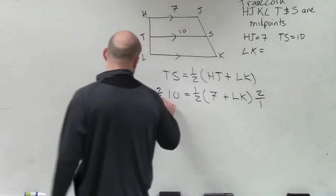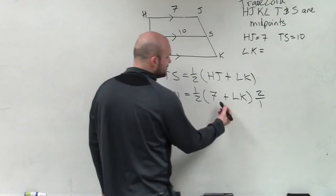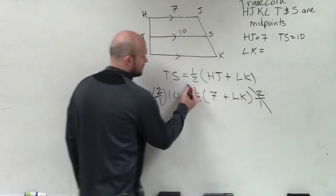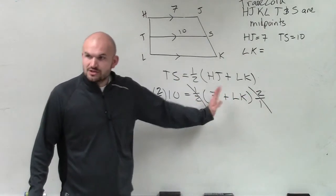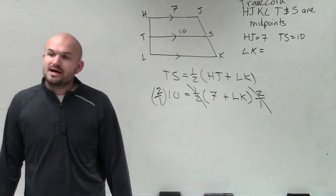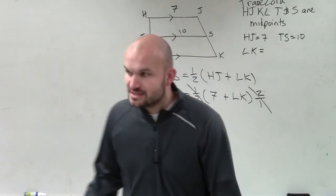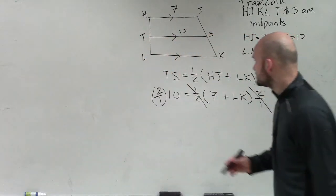So what I'll do is I'll multiply by the reciprocal on both sides. So the reciprocal of 1 half is 2 over 1. And then when you multiply this, you don't need to multiply everything, because this is all an expression. So therefore, 2 over 1 times 1 half just multiplies to give you 1. And then you're left with 7 plus LK.